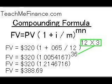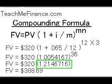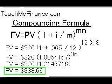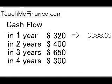You multiply 12 times 3, which comes out to 36. So you take 1.0054167 to the power of 36, because there are 36 compounding periods, and that comes out to 1.2146716. You multiply that by the $320 payment, and that comes out to $388.69. In other words, one year from today you're going to get $320, and that $320 is going to have the opportunity to earn interest at 6.5% for three years compounded monthly, and at the end of the fourth year — four years from today — you'll have $388.69.